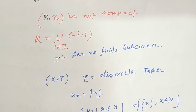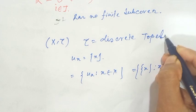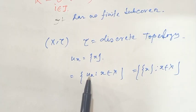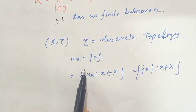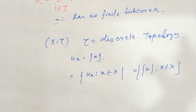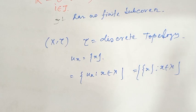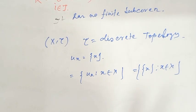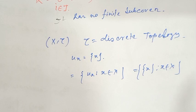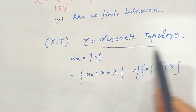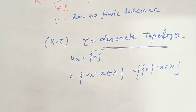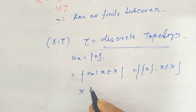But consider (X, τ) where τ is the discrete topology. In the discrete topology, the open sets are singleton sets {x} for x in X. This topology is compact when X is a finite set — similar to the metric space case. This discrete topology is compact when X is finite; otherwise when X is an infinite set it is not compact.